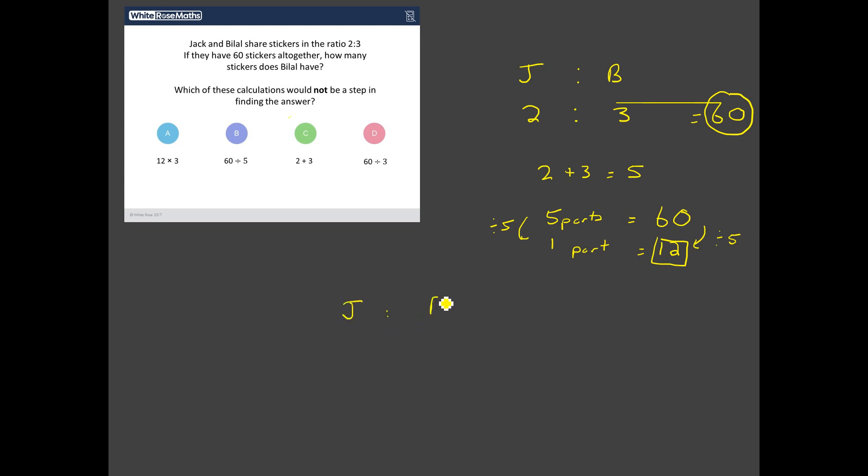So let's go back now. We had Jack, and we've got Bilal. Jack's got two parts. Bilal's got three parts, and each of those parts is worth 12 stickers. So I think that means that Jack has got two lots of 12, which I think is 24 stickers. And I think Bilal's got three lots of 12, and three lots of 12 are 36 stickers. What's a good way to check whether we've got this right? Well, if we add up those stickers, 24 plus 36, I think that gives us the 60 stickers that we know we have to play with from the question.